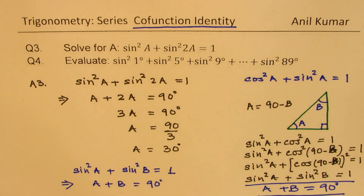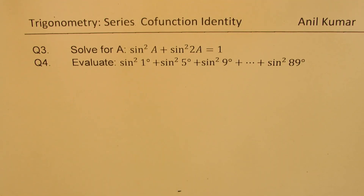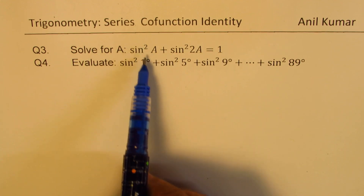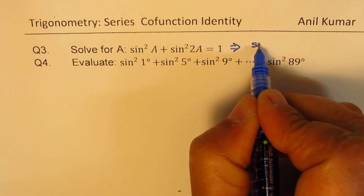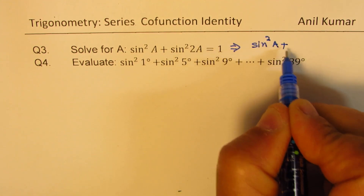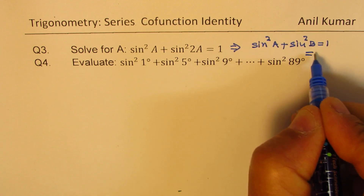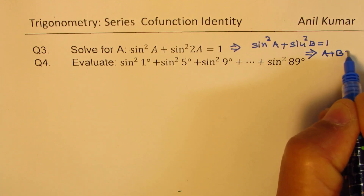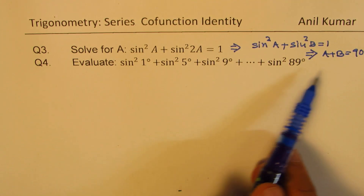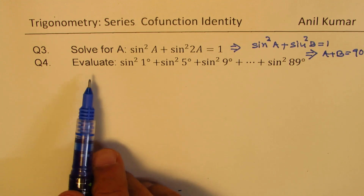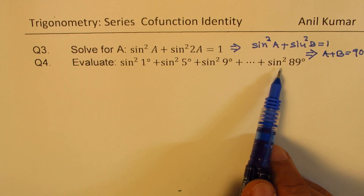Let's move forward and solve question number 4. We have already learned that sine square a plus sine square b equals 1 means a plus b equals 90 degrees. Now in example 4, it's a similar but slightly different concept: evaluate sine square 1 plus sine square 5 plus sine square 9 and so on till sine square 89.